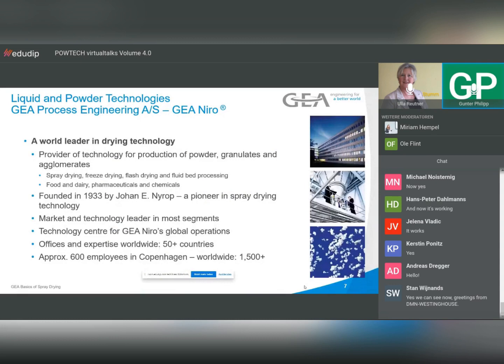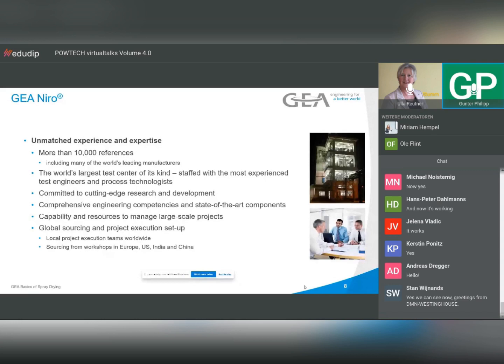It becomes easier when I talk about GEA Process Engineering AS, which is the company name for what we call Niro, because Niro is the original part. It was founded in 1933. The founder felt that 'New Europe' was too difficult to spell in the rest of the world, so he named his company Niro. We have about 600 employees at our headquarters in Copenhagen and about 1,500 worldwide.